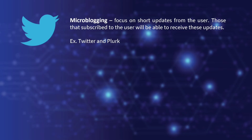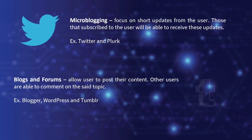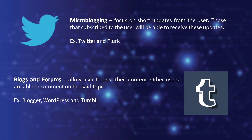Micro blogging sites focus on short updates from the user; those who subscribe to the user will be able to receive these updates. Examples include Twitter and Plurk. Blogs and forums allow users to post their own content and other users are able to comment on the same topic — examples include Blogger, WordPress, and Tumblr. Those are the six types of social media: social networks, bookmarking sites, social news, media sharing, micro blogging, and blogs and forums.